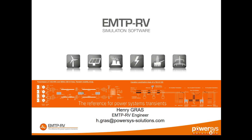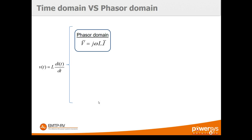Before I start, let's make sure we understand what a time domain software is. Time domain software, in opposition to phasor domain software, are also called electromagnetic transient programs. Both types operate in time domain, but the difference is the way the equations are solved. For example, the differential equation of an inductance in phasor domain software uses the Laplace transformation, and that equation is valid only for a given frequency.